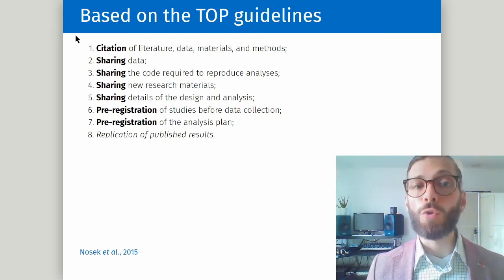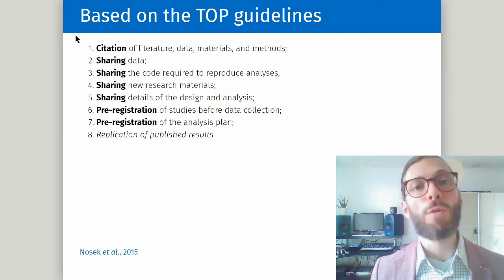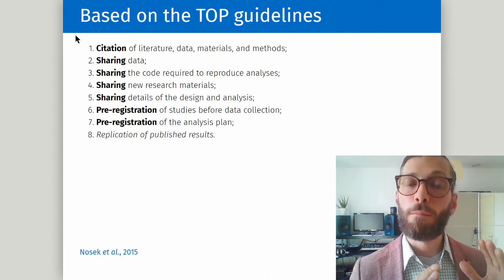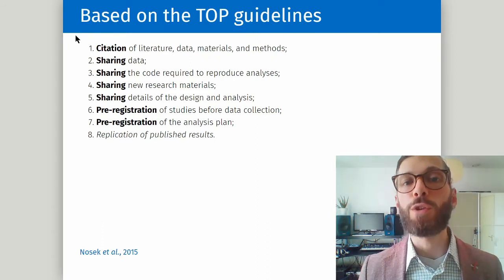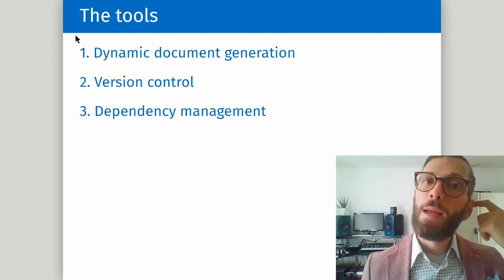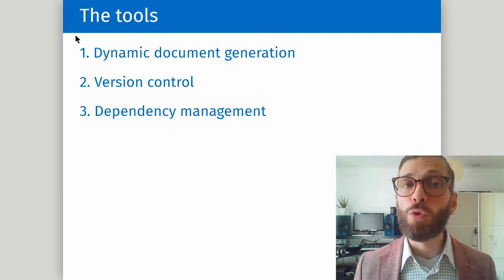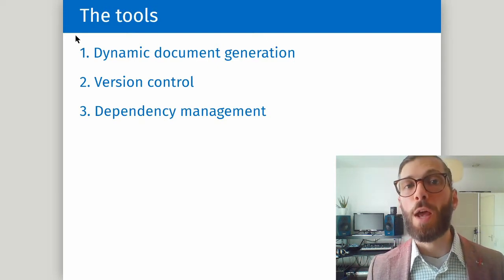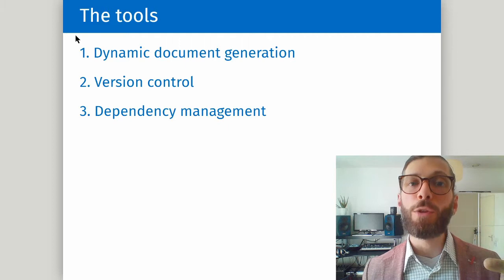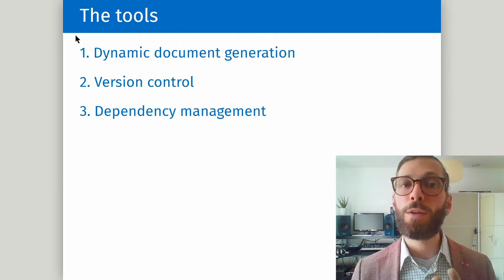The TOP guidelines also talk about replicating published results, but this is more about the topic of your research rather than the process, so it doesn't fall within the scope of WORKS. What I would like to explain first are three tools which WORKS is heavily based upon: dynamic document generation, version control, and dependency management.